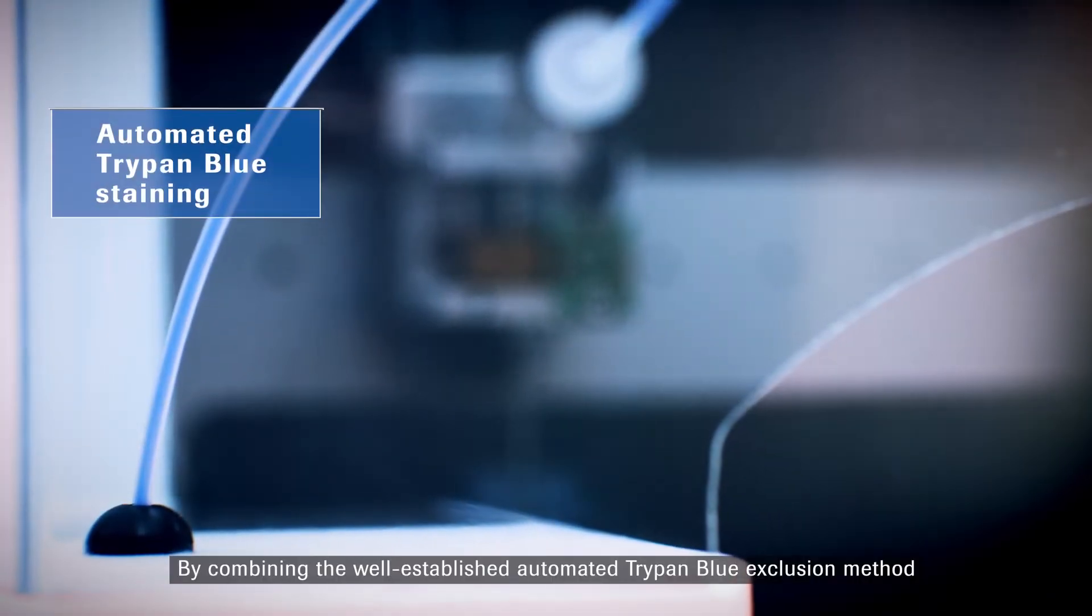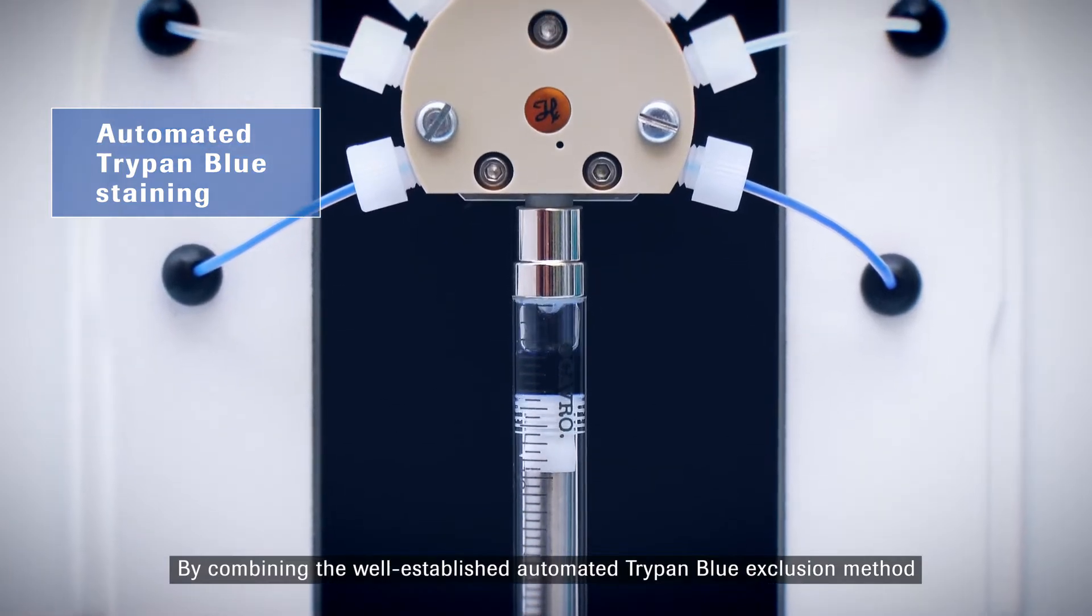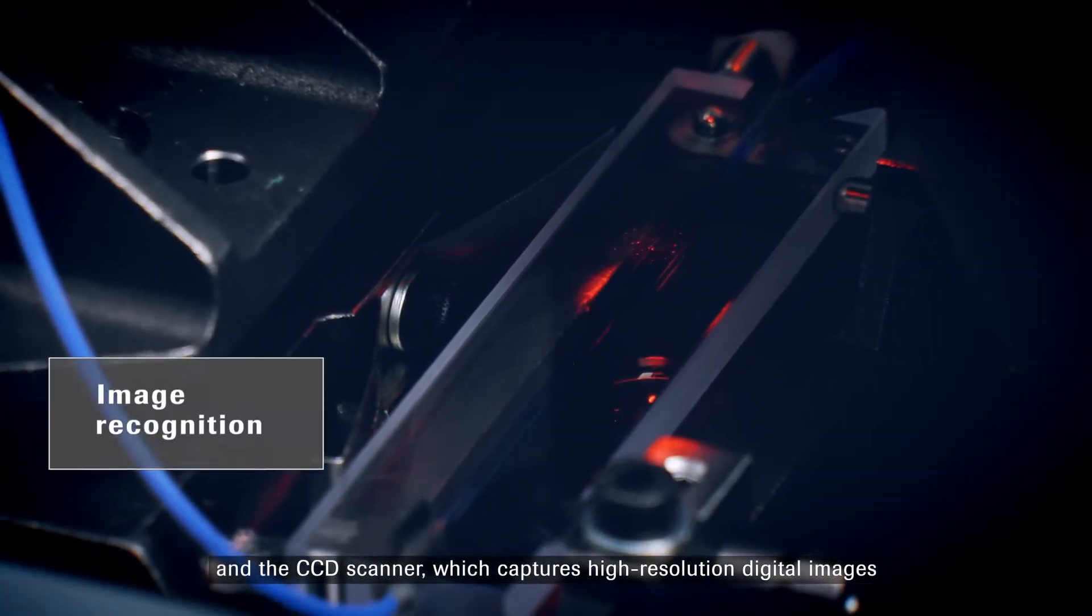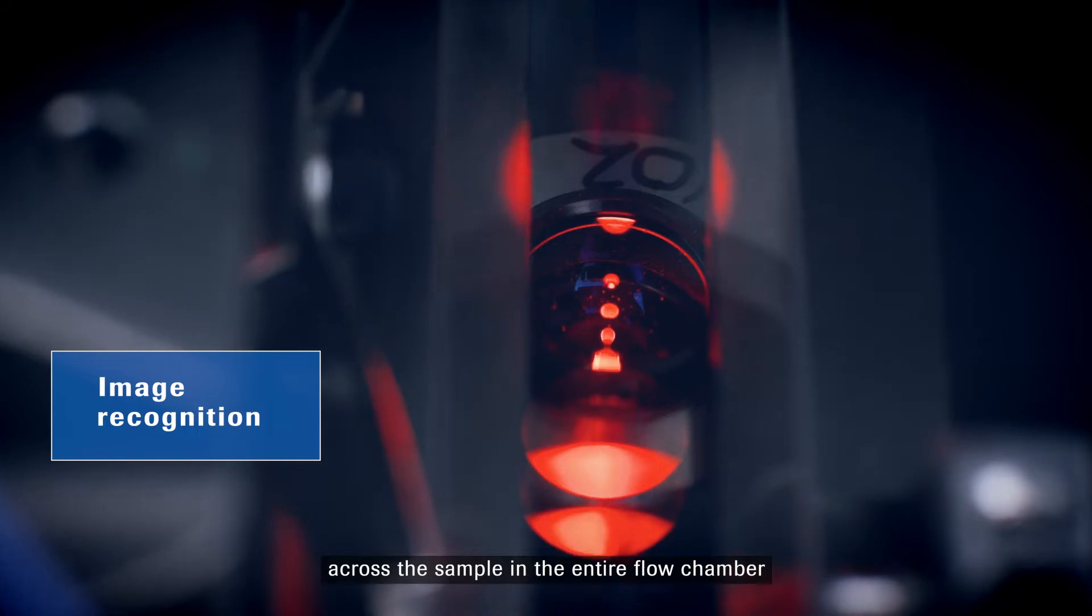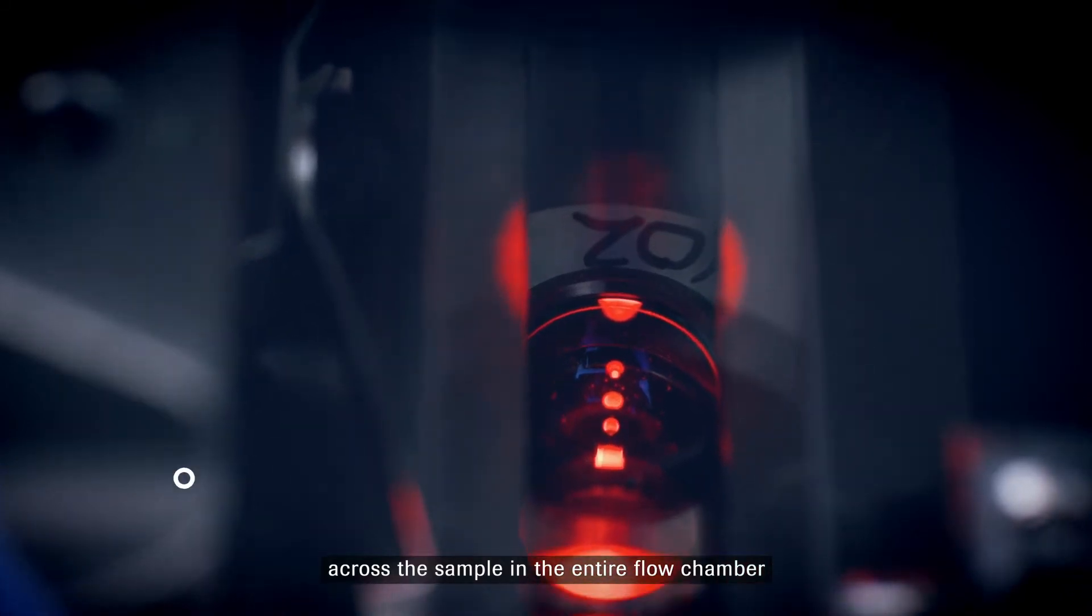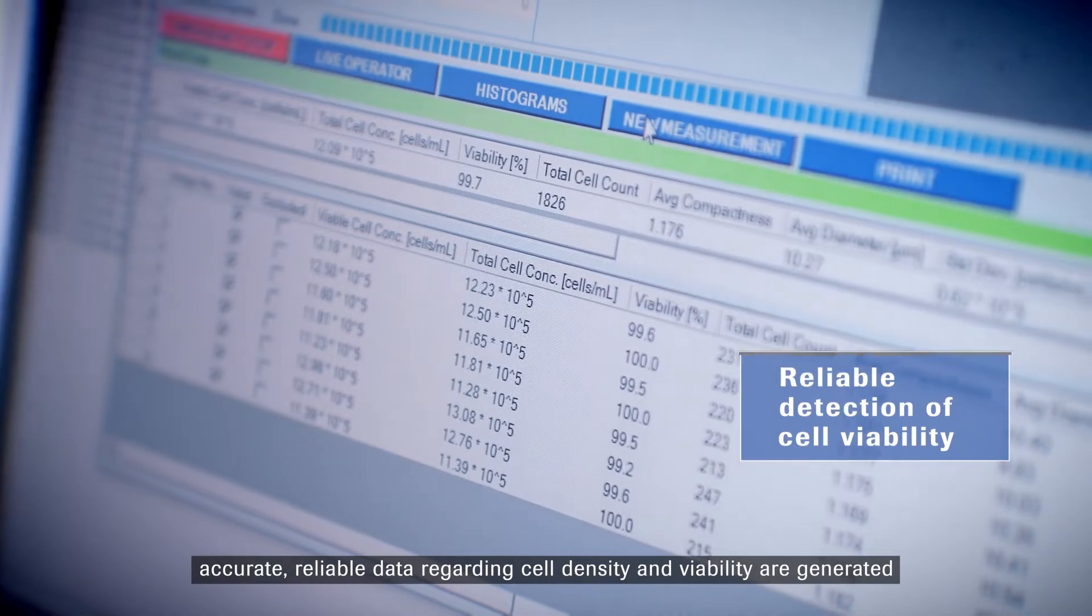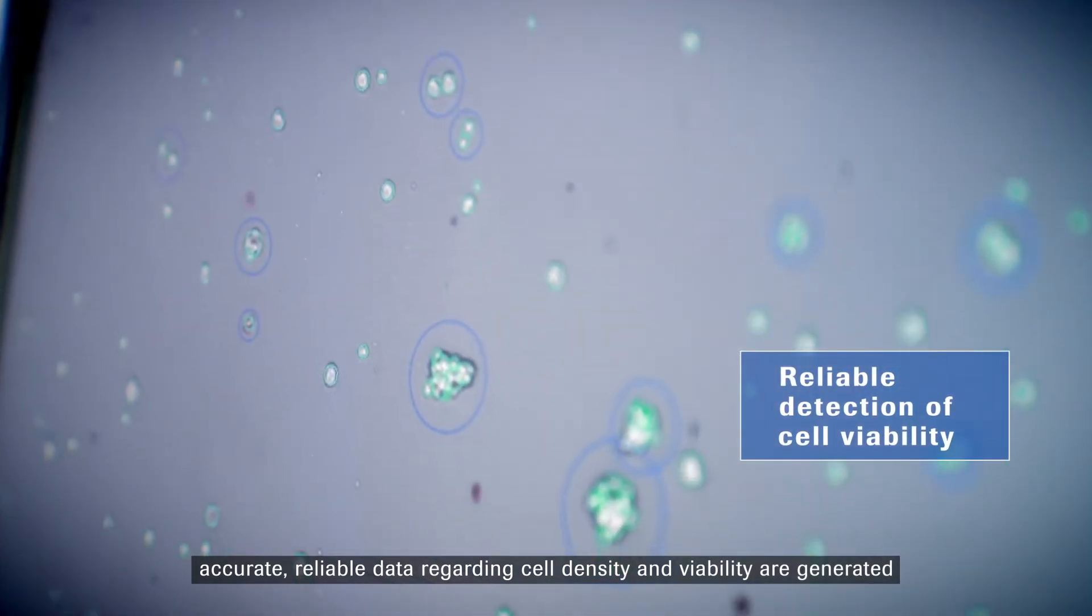By combining the well-established automated Trypan Blue exclusion method and the CCD scanner, which captures high-resolution digital images across the sample in the entire flow chamber, accurate, reliable data regarding cell density and viability are generated.